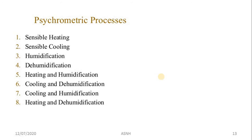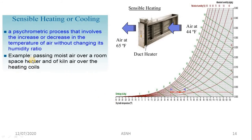There are various psychrometric processes. The important ones are: sensible heating, sensible cooling, humidification, dehumidification, heating and humidification, cooling and dehumidification, cooling and humidification, and heating and dehumidification.